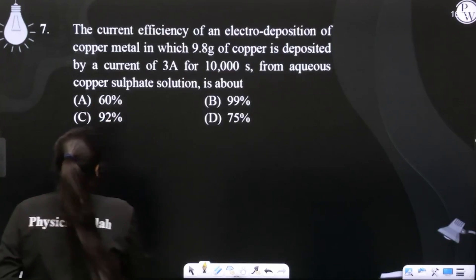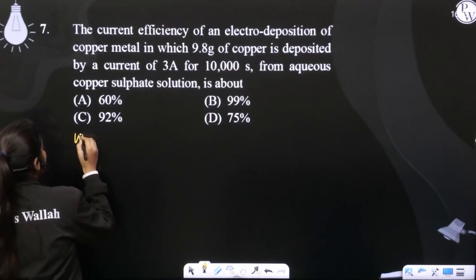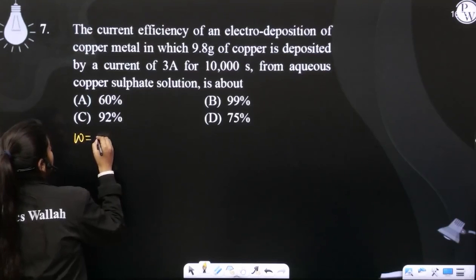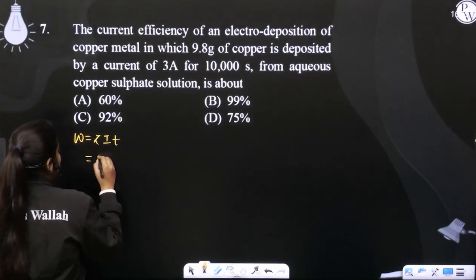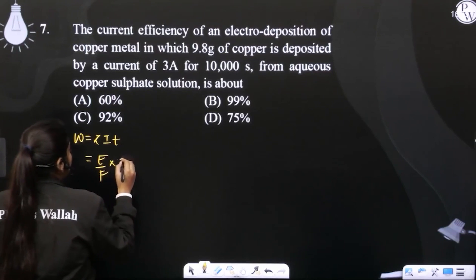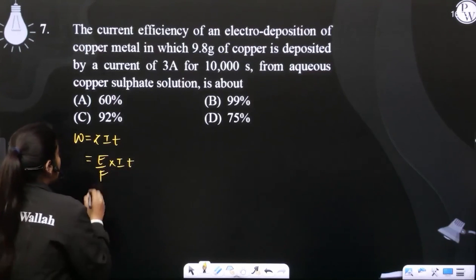So, what have we given? When we calculate the mass, what do we do? W equals Z times i times t. Z is what? E by F into it.